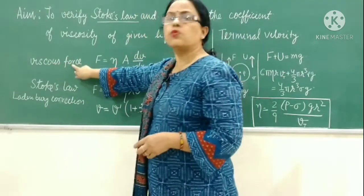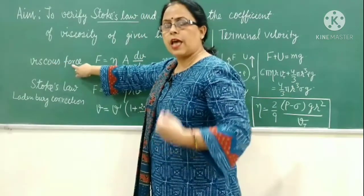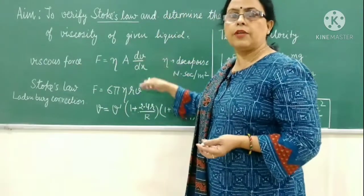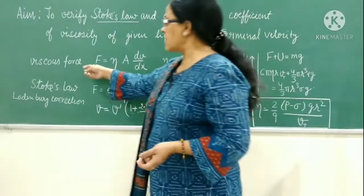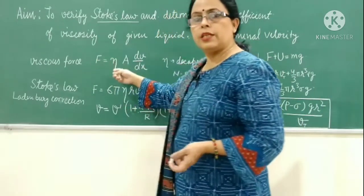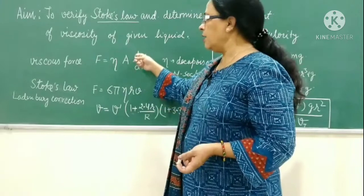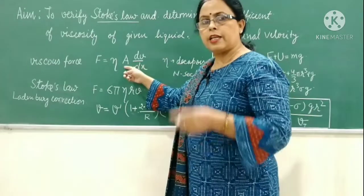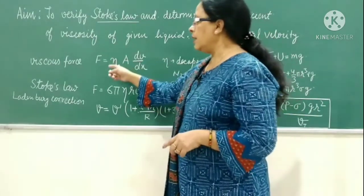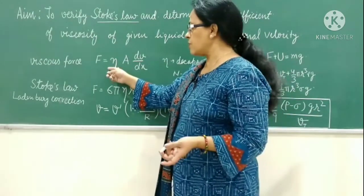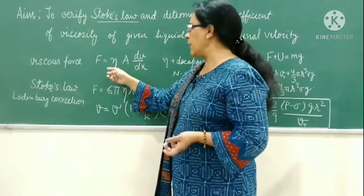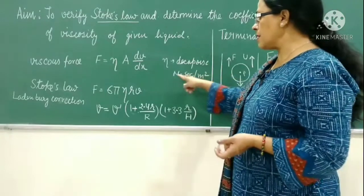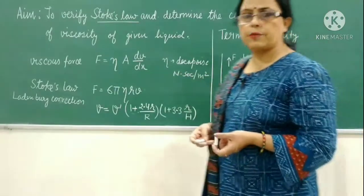This viscous force tries to reduce any velocity gradient among the various layers of the liquid. This is given by F equals eta A dV by dx, where dV by dx is the velocity gradient, A is the area of the layers in contact. Eta is the coefficient of viscosity, which will be different for different liquids. Its MKS unit is newton second per meter square.